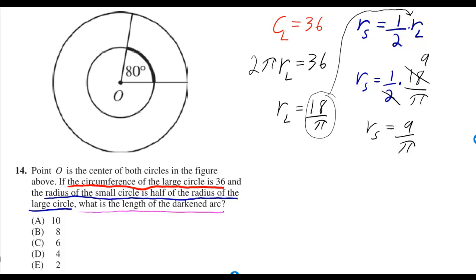They want to know the length of the darkened arc. Let's call that a. That darkened arc is a piece of the circumference of the small circle.